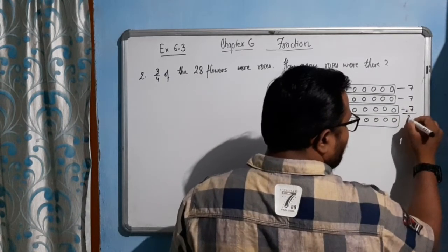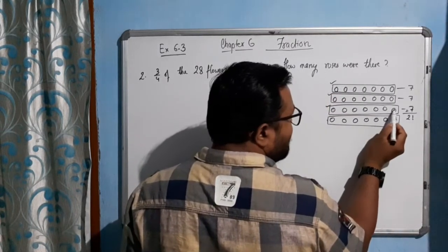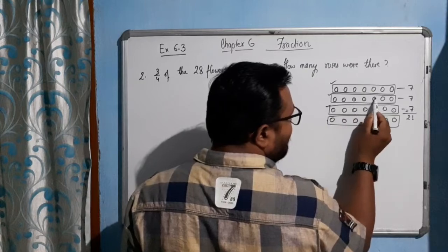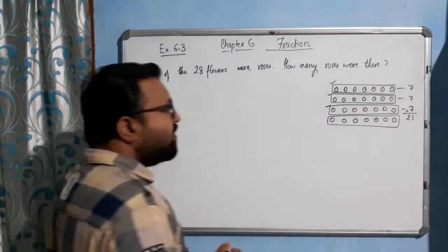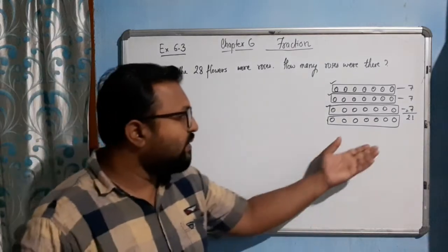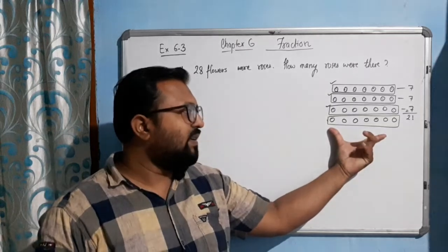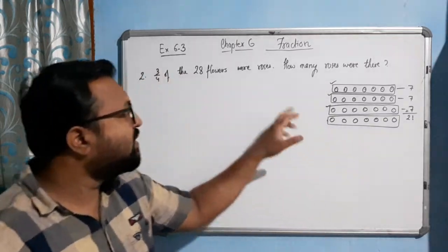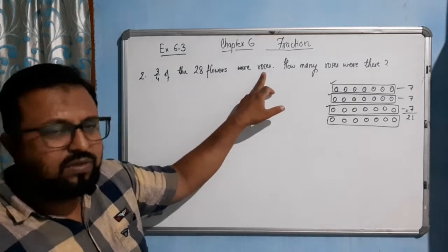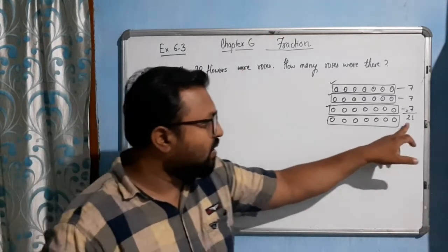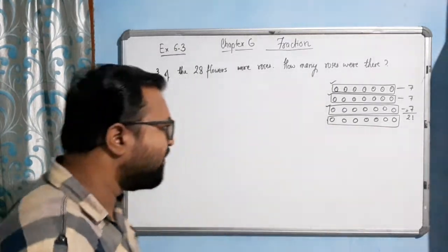How many we are getting? Twenty-one flowers. One two three... to twenty-one. So by diagrammatically we can see how many flowers we will get: 21 flowers. And rest seven are different flowers. Sorry, 21 roses they are talking about. So 21 are roses and rest seven are some different flowers.